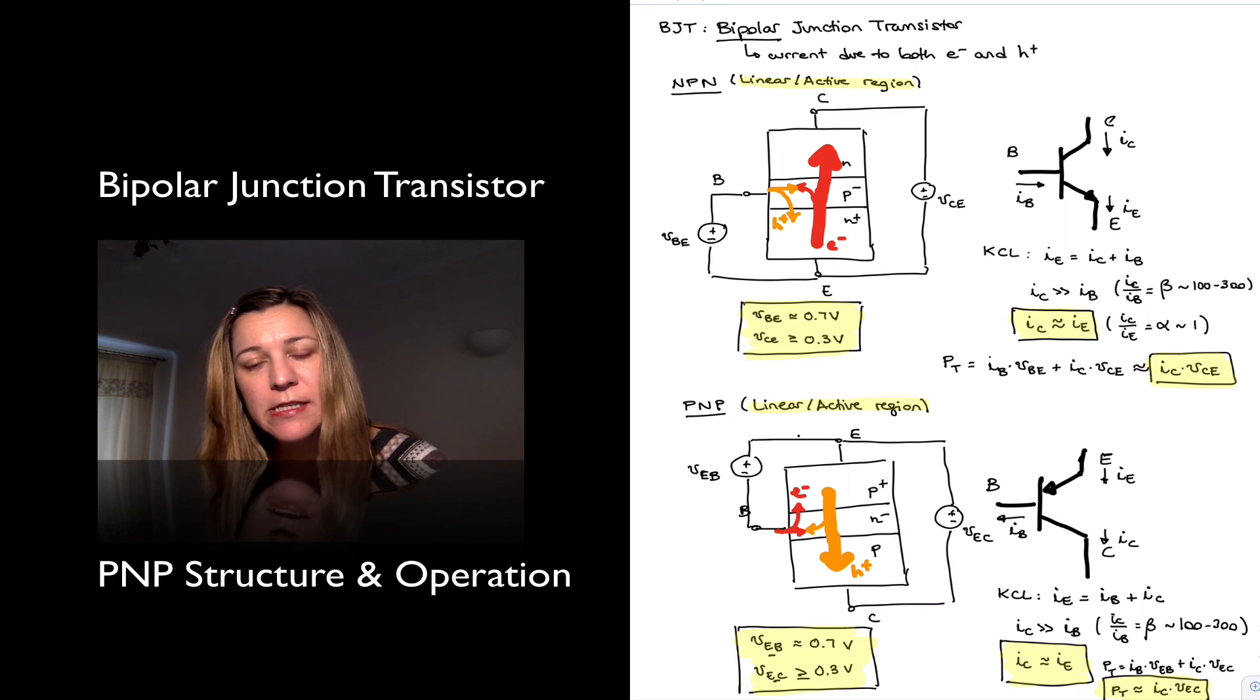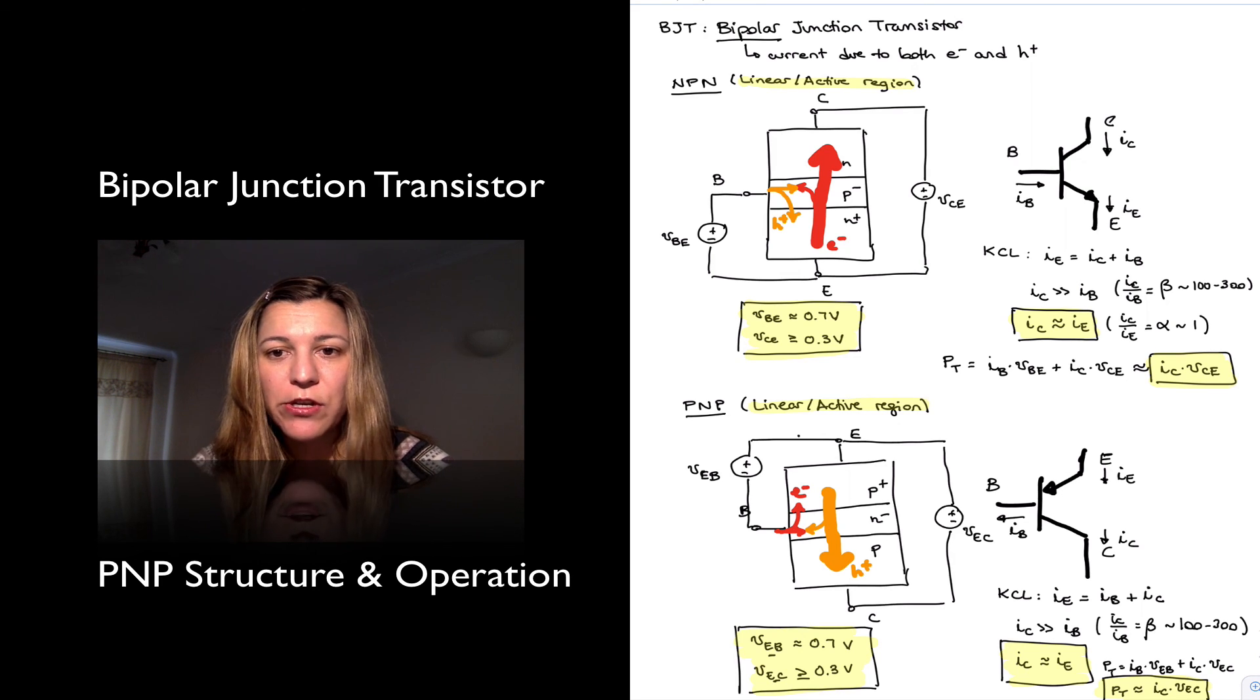So that summarizes the operation and structure of the bipolar junction transistor, the PNP in this case, in the linear active region of operation.